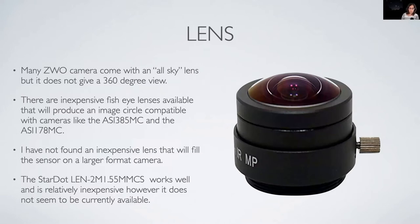You'll also need a lens. ZWO ships cameras like the 178 and the 385 with an all-sky camera lens that'll work, but that lens will not give you a full 360-degree view. I picked up a Stardot lens which gives a slightly wider field of view. Unfortunately, it doesn't look like this lens is available any longer, and I haven't found a good replacement. If you look for a 1.5-millimeter CS-mount lens, that should be the equivalent, but I can't find one anywhere.